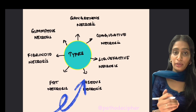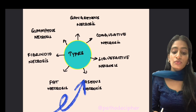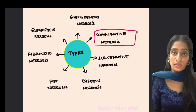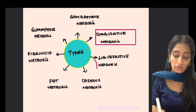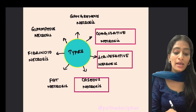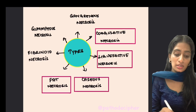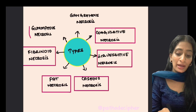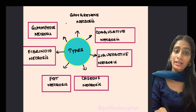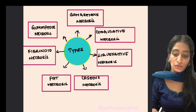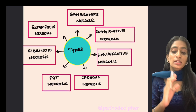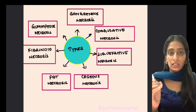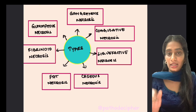The types of necrosis are: coagulative necrosis, liquefactive necrosis, caseous necrosis, fat necrosis, fibrinoid necrosis, gummatous necrosis, and gangrenous necrosis. We will look at each type with a classic example.